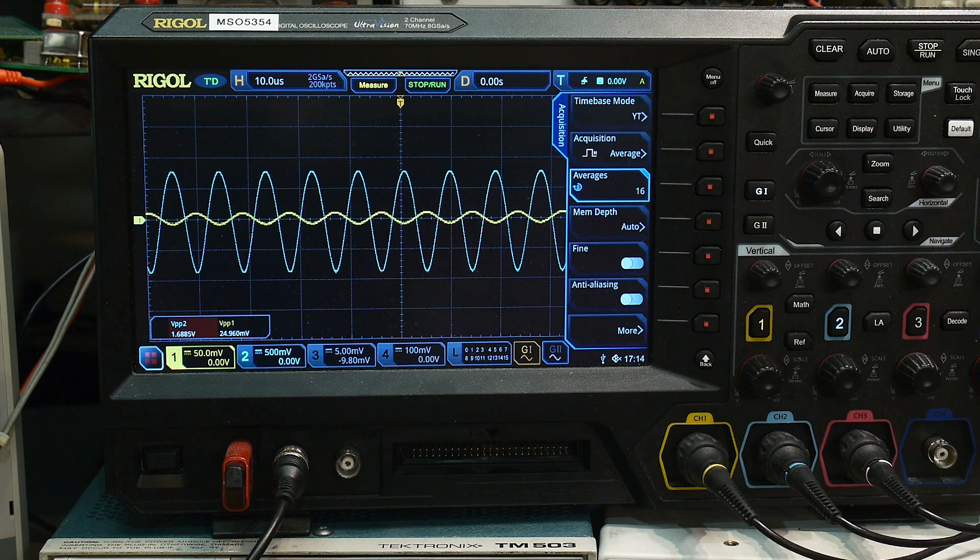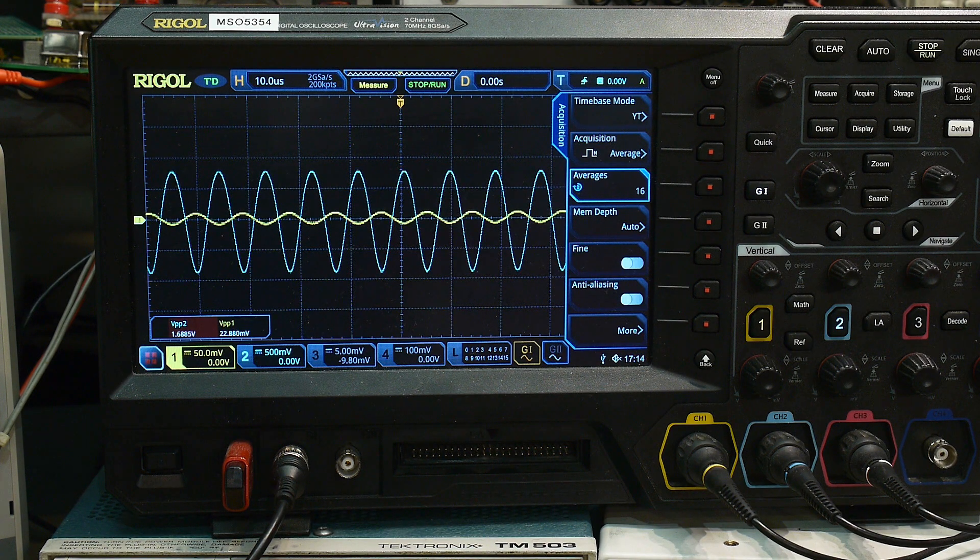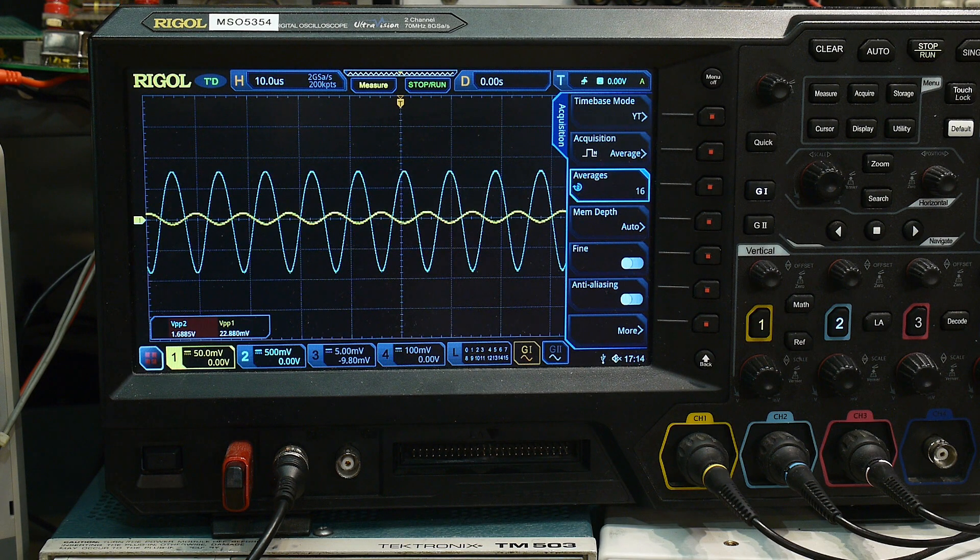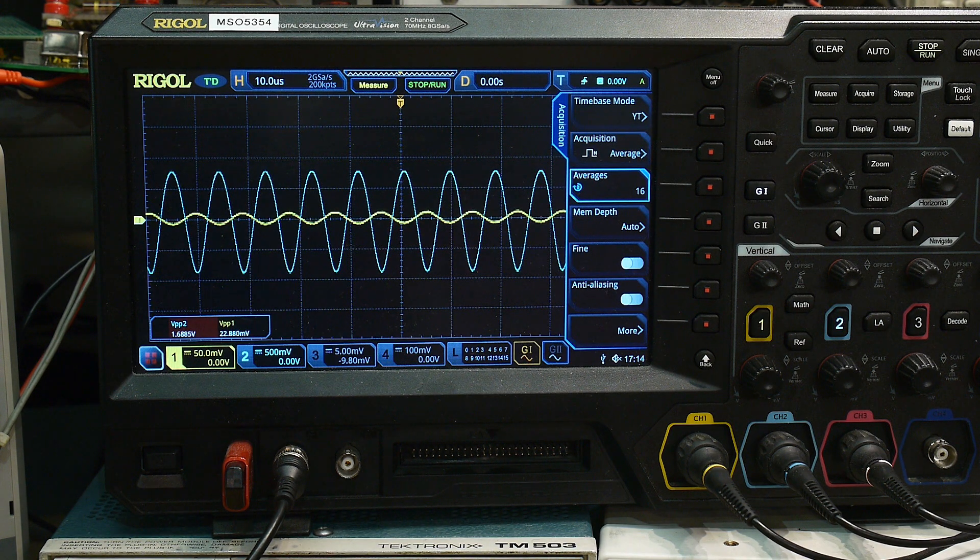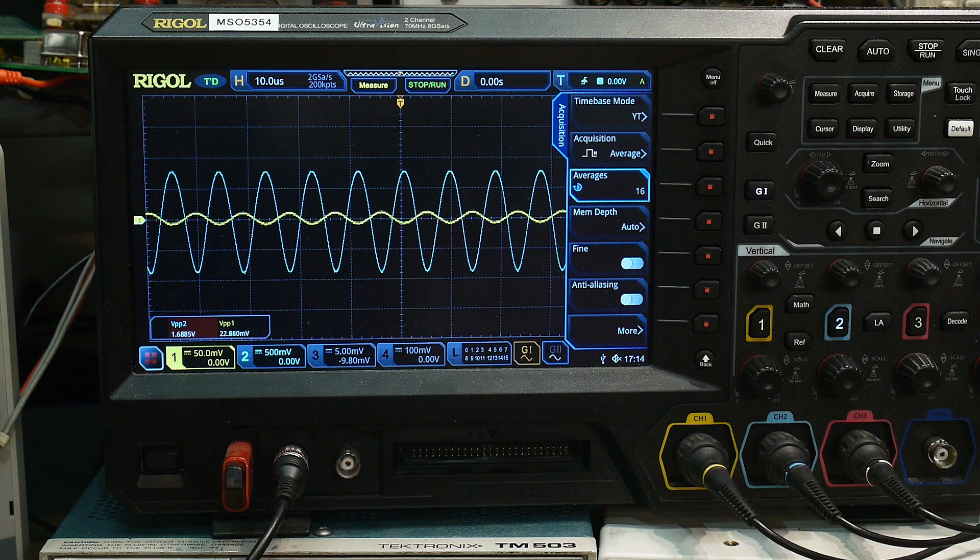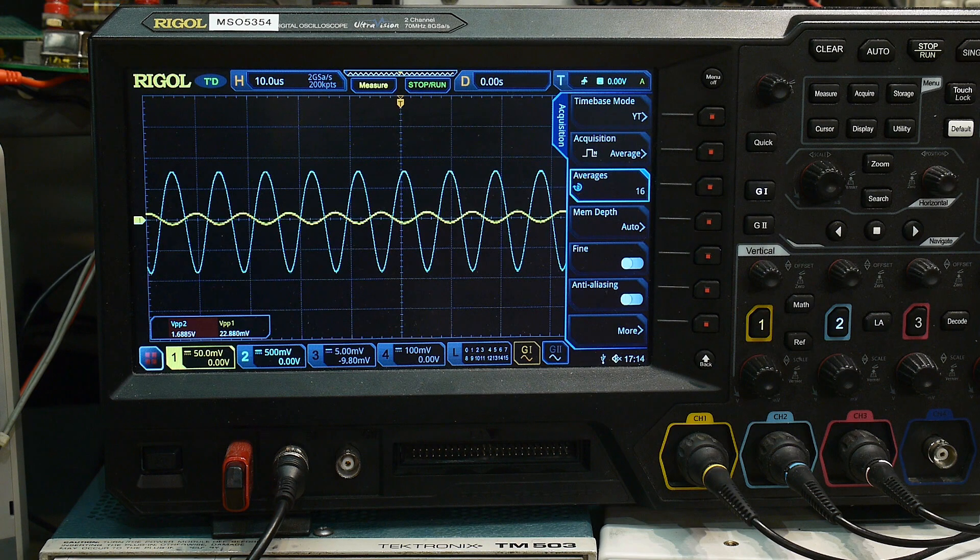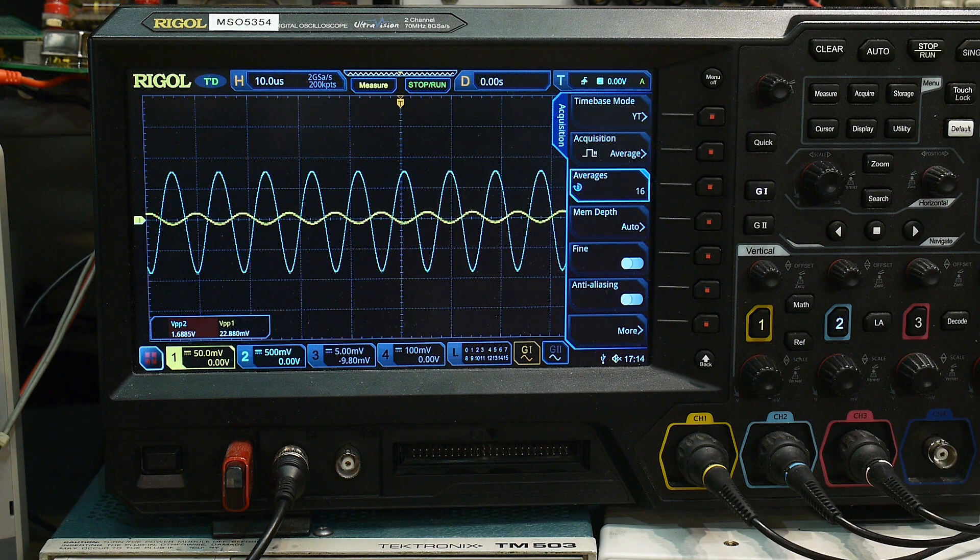Okay, this is our cascode amplifier. So our cascode amplifier is measuring 1.68 volts, and the inputs reading a little bit different. 22.8.